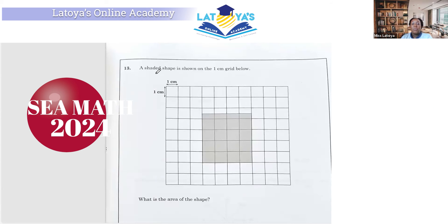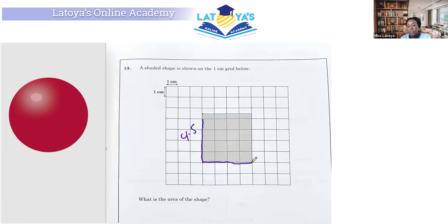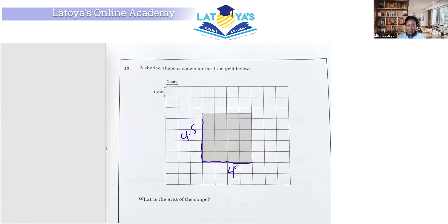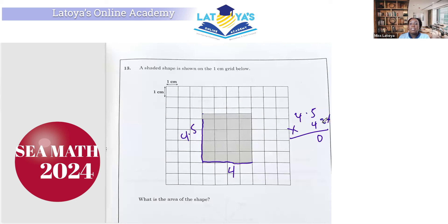Question 13. They want us to find the area of the shape, and it's a 1-centimeter grid. So let's check. Here's going to be 1, here's going to be 2, here's going to be 3, here's going to be 4. And this is half of 1. So it's going to be a half or 0.5. So it's going to be 4.5. And across is 1, 2, 3, 4. So I understand that it may look like a square, but based on the measurements, it is not a square. So to find the area of the shape, we can multiply 4.5 by 4. 5 fours are 20, 4 fours are 16, and 2, 18. So we are getting the area to be 18 centimeters square.